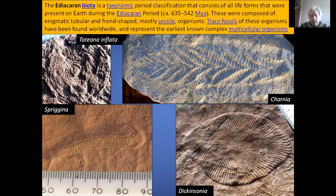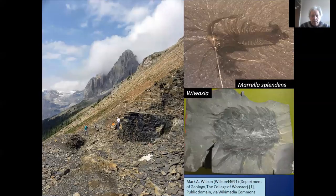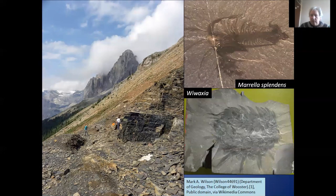Strangely enough, when you come to the Cambrian — the next stage on — you find pretty much no evidence of any of those Ediacaran fauna. Instead we have lots of hard-bodied organisms with hard body parts, well preserved. This is the Burgess Shales, which is famous for the vast array of species found there. There are no signs of Ediacaran forms there, so something happened to those soft-bodied organisms before the Cambrian explosion, when we have this big radiation in new species.